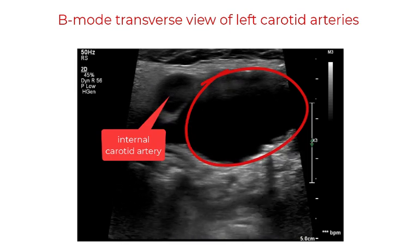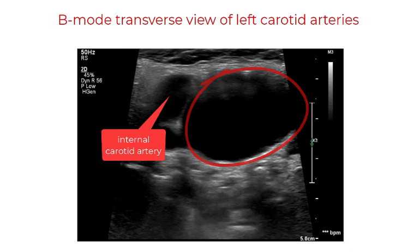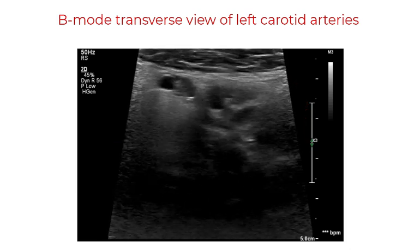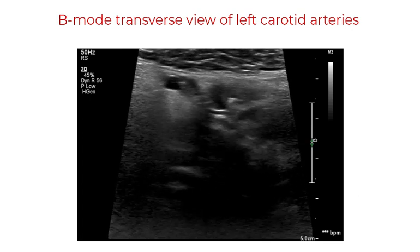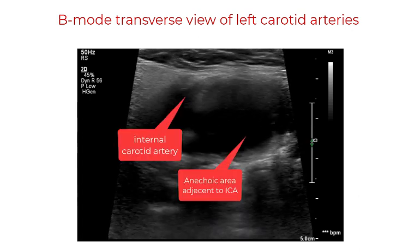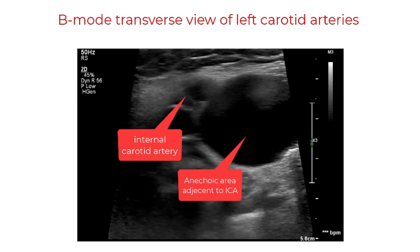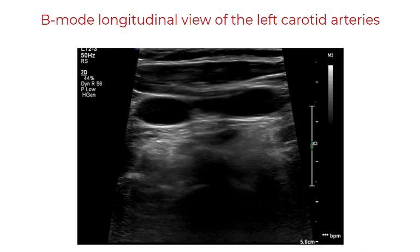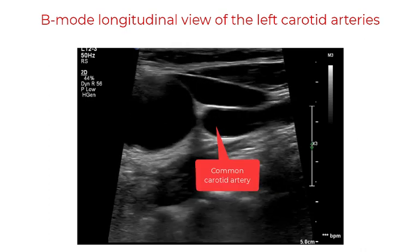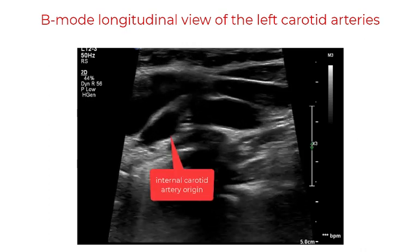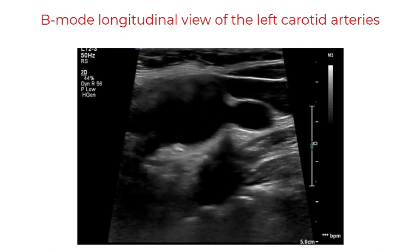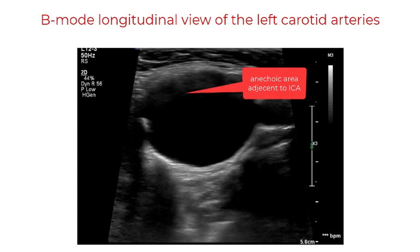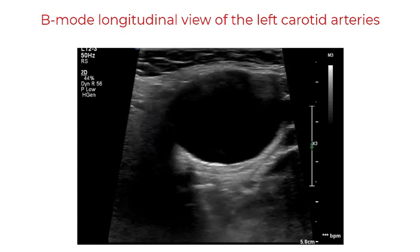We can note here the normal caliber of the internal carotid artery adjacent to this large anechoic region. By moving the transducer back down towards the bifurcation and towards the base of the neck, we can observe again this adjacent anechoic region to the internal carotid artery. The transducer is then moved in longitudinal view to obtain a different view of this anechoic region. We can note that the common carotid artery is normal and this anechoic region lies just where the carotid bifurcation would be expected.